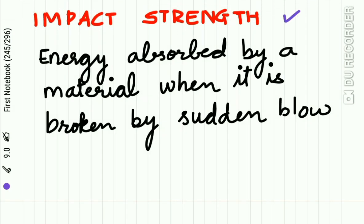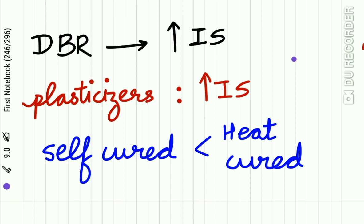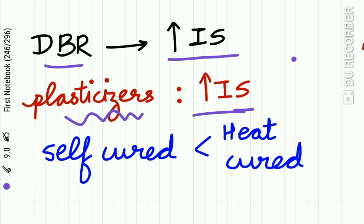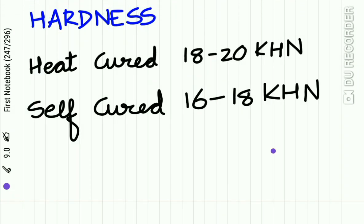Impact strength is defined as the energy absorbed by the material when it is broken by a sudden blow. Ideally, denture base resins should have very high impact strength, and this impact strength is increased by the addition of plasticizers. The impact strength of self-cured resin is less than heat-cured resin, meaning dentures made from self-cured resin may break more easily than those made from heat-cured resin.